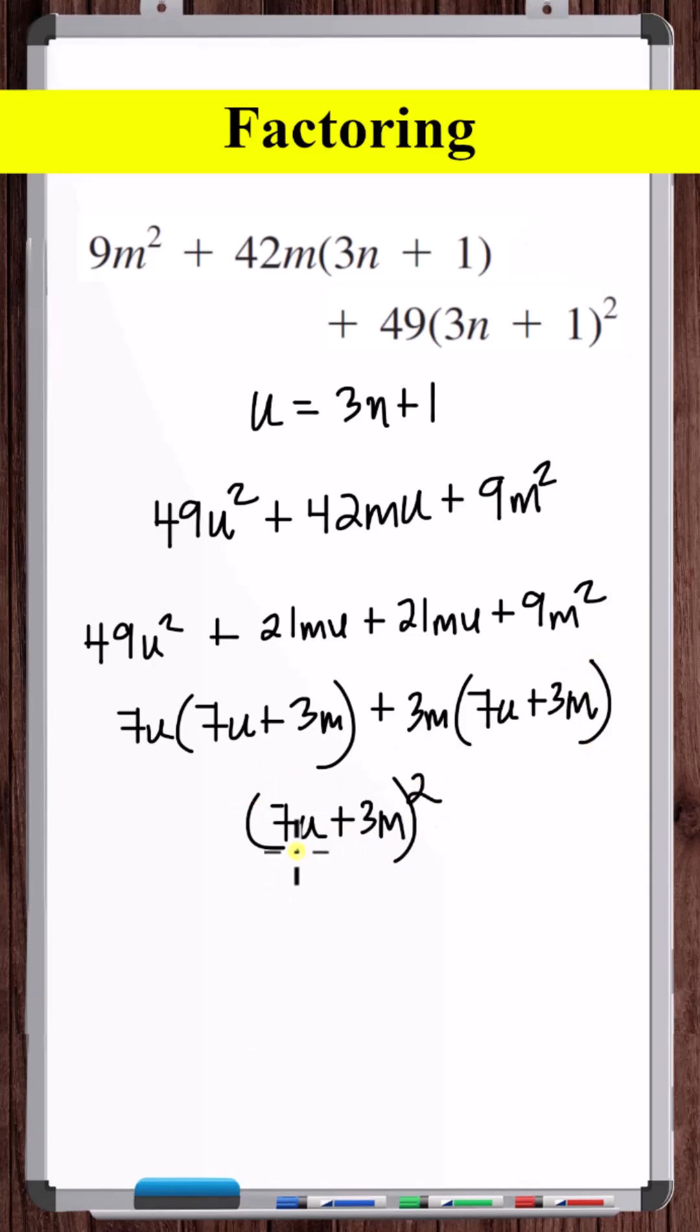So we're left with, but u is equal to 3n plus 1. So we've got, and that's fully factored.